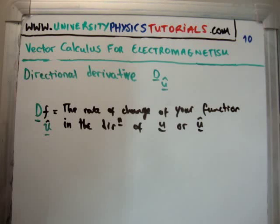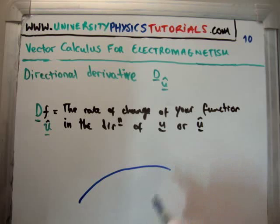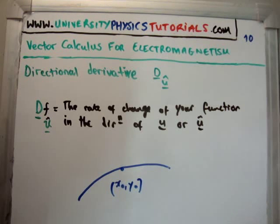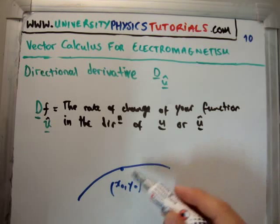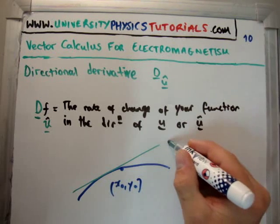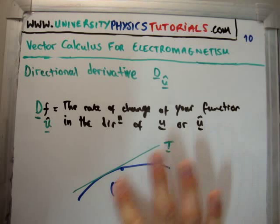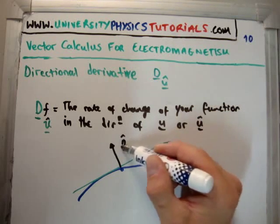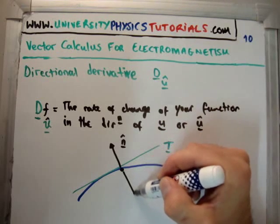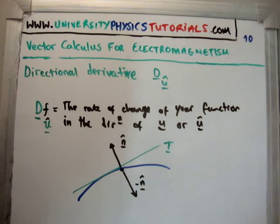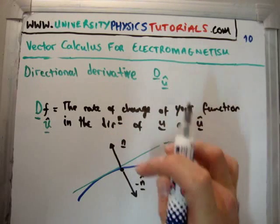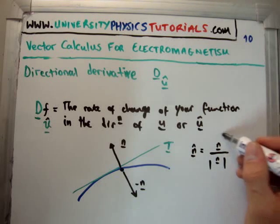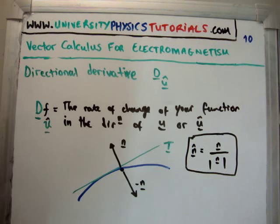Going back to my video on the normal vector — we found that if we have a random curve and want to define the tangent at point (x₀, y₀), we get ∂f/∂x and ∂f/∂y evaluated at (x₀, y₀), and that gives us the equation of our tangent vector. The normal vector is the one perpendicular to the tangent. Of course you can have minus n as well, and you choose your convention. Note that n-hat equals the vector n divided by its magnitude, which gives us direction rather than magnitude.